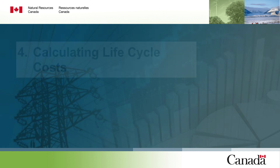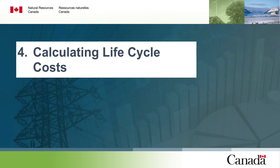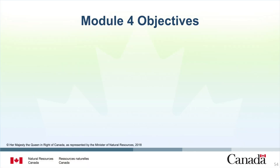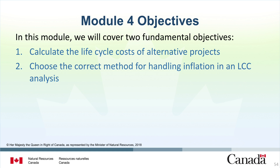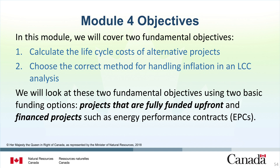That concludes Module 3. In Module 4, we will cover how to calculate lifecycle costs of projects. In the first module, we talked about economic optimization and the primary concepts behind lifecycle cost analysis. In the second module, we covered specific data requirements and sources. In Module 3, we discussed the importance of adjusting cash amounts to present value using discounting factors. Now you are prepared to actually calculate lifecycle costs. In this module, we will cover two fundamental objectives: first, we will calculate the lifecycle cost of alternative projects, and next we will choose the correct method for handling inflation in a lifecycle cost analysis. We will look at these objectives using two basic funding options: projects that are fully funded upfront, and finance projects such as energy performance contracts or EPCs.